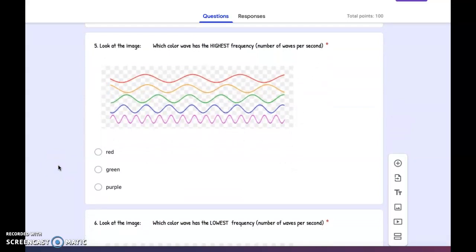Number five: Look at the image. Which color wave has the highest frequency, which is number of waves per second? Red, green, or purple?